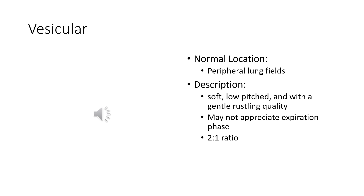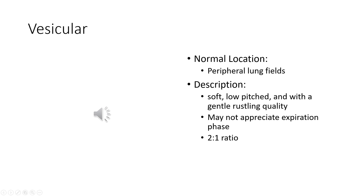Vesicular sounds are what we should be hearing when a patient is breathing through their mouth and when we're auscultating over the peripheral lung fields. That's what we should be hearing over those segments. It's going to be a softer, lower-pitch, gentle rustling sound. You might not hear the expiratory phase much — we say we hear inspiration more than expiration, so they have more of a two-to-one ratio. This is what you would hear normally over the peripheral lung segments.